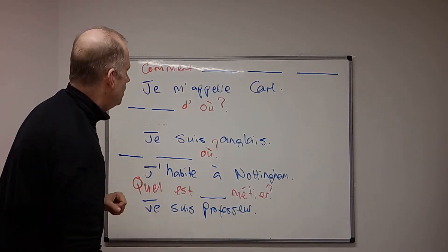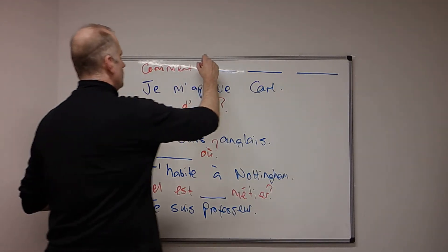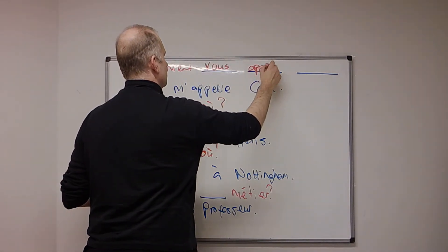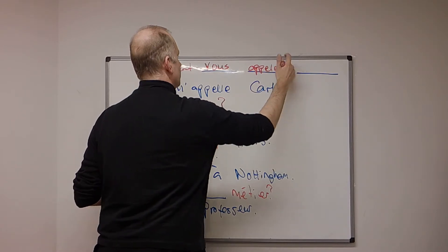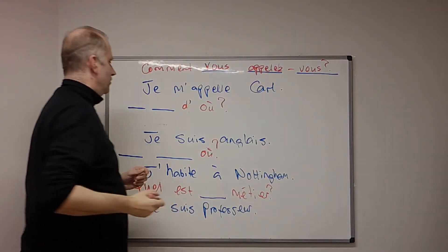So, comment tu t'appelles? Then, in the vous form, it becomes, comment vous appelez-vous? Comment vous appelez-vous? And then, remember we had tu es d'où?